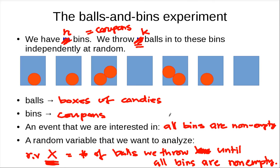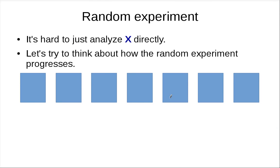We want to analyze this random variable X — find its expectation. You can try to work on it directly, but it's hard to analyze X directly. So let's think about how the random experiment progresses and come up with a way to break it down into smaller, easier parts, as we did with the empty bins analysis.